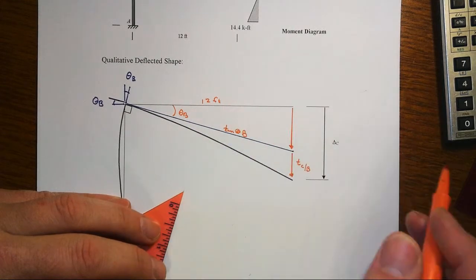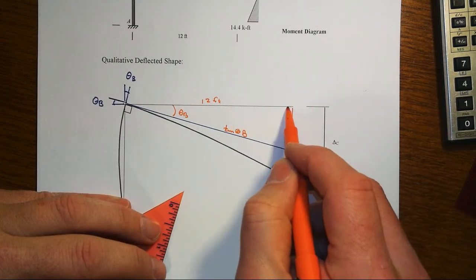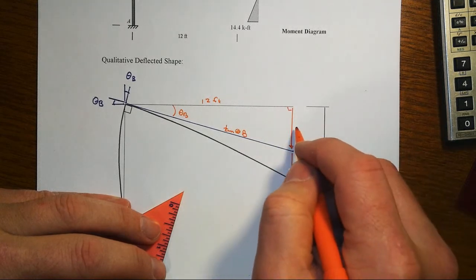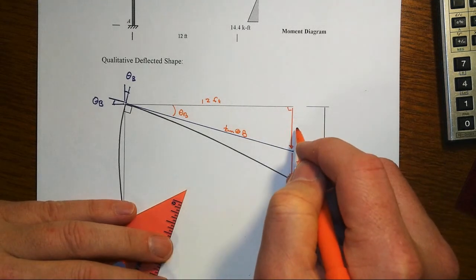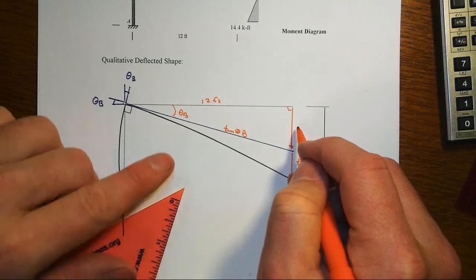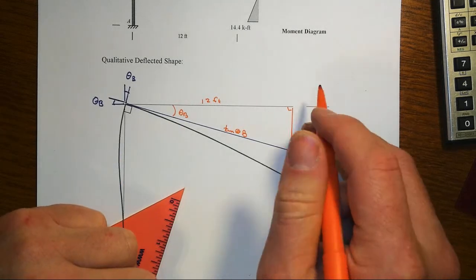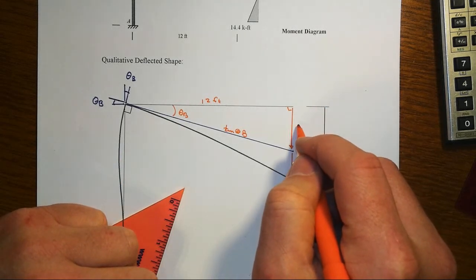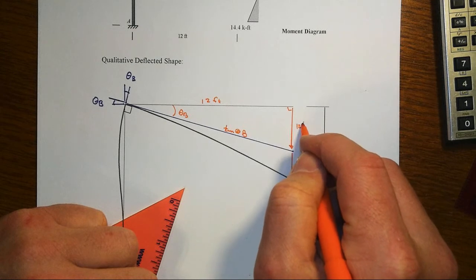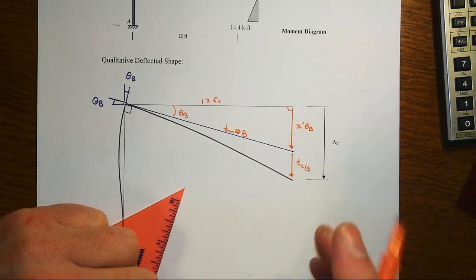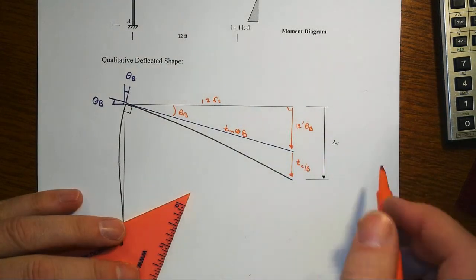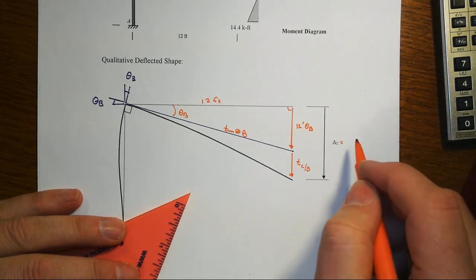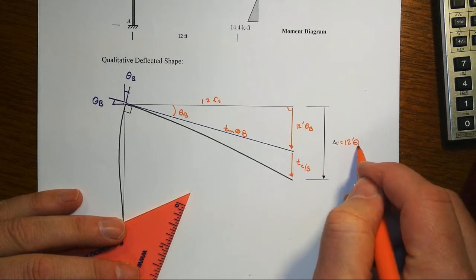in this case of C with respect to the tangent that was drawn back at B. So since the distance from B to C is 12 feet, and opposite over adjacent is equal to tangent, and because the tangent of the angle is going to be approximately equal to theta B in terms of radians because of small angle theory, not drawn that way but certainly mathematically will work out that way, then this delta C is just the sum of these two pieces.